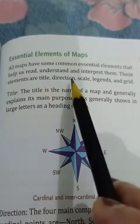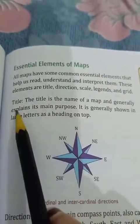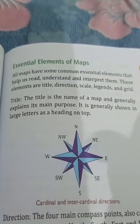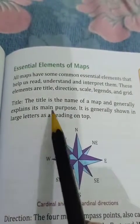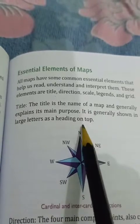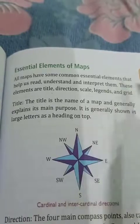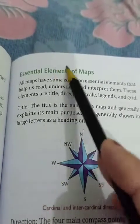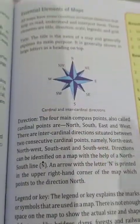These elements are the title, direction, scale, legend, and grid. The title is the name of a map and generally explains its main purpose. It is generally shown in large letters as a heading on top of the map.